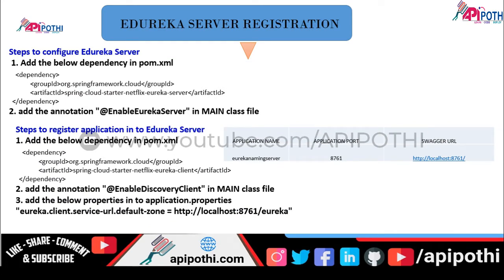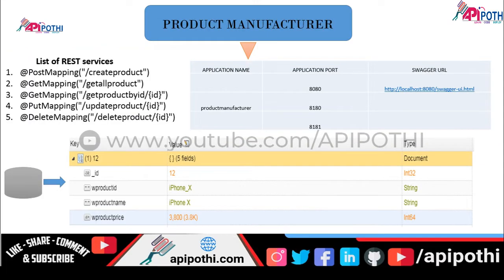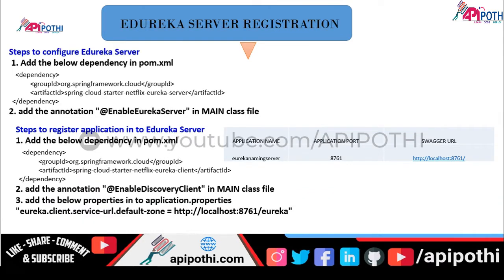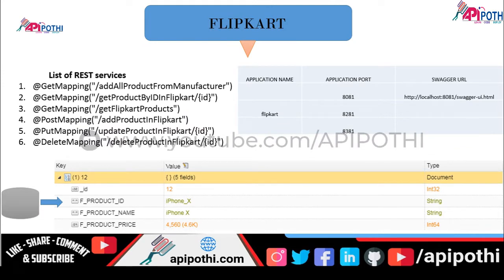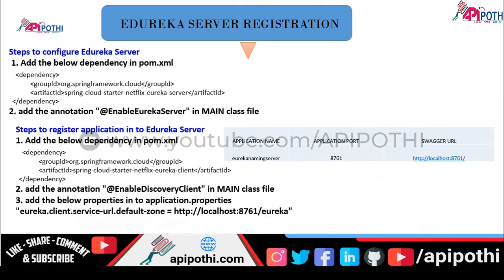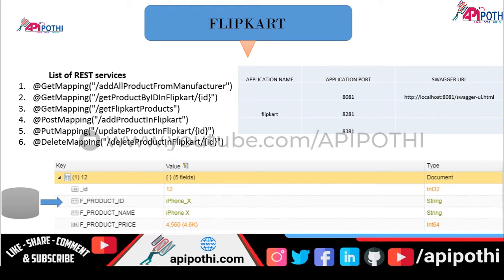Following that, we also configured the Eureka naming server, and inside the Eureka naming server we are able to register our product manufacturer service. We also implemented the Flipkart services having six APIs, and we are able to register Flipkart services inside the Eureka naming server. Inside the Flipkart services, we are able to make a Feign call to our product manufacturer services to get all product details, and depending on Flipkart's business percentage we are able to update and save the data inside MongoDB. We tested all APIs through Swagger URL.